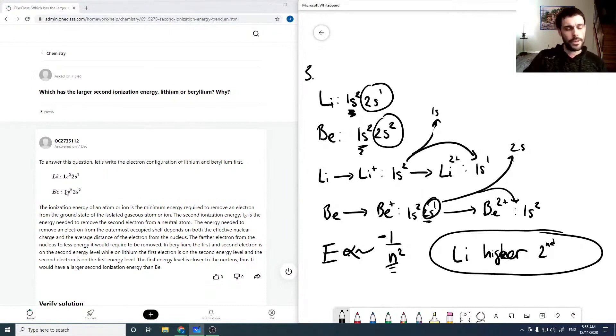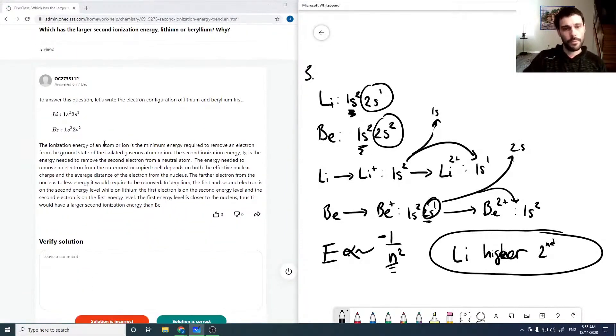The ionization energy of an atom or ion is the minimum energy required to remove an electron, remove the second, and the energy needed to...